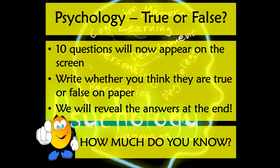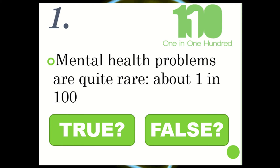The true or false round is nice and straightforward — literally a couple of minutes to go through ten questions which are going to appear on the screen. You just need to jot down whether you think they are true or false, and this will give us some information about how much you know at this point about psychopathology. So off we go. Number one: mental health problems are quite rare, about one in one hundred. True or false?